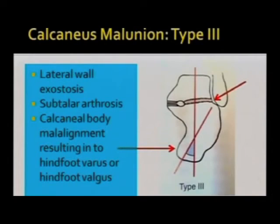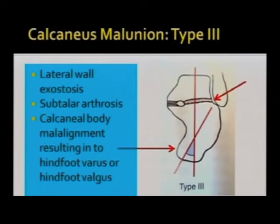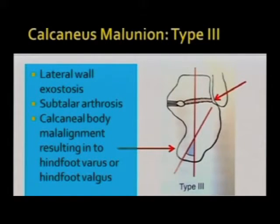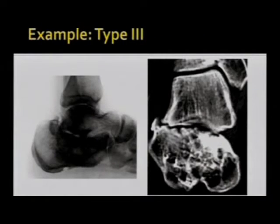Type 3 malunion has everything found in Types 1 and 2, plus malalignment of the calcaneal body into varus or valgus. In these cases, over and above fusion and lateral wall exosectomy, you are obliged to do a calcaneal osteotomy to correct the body malalignment. That is an example of Type 3.